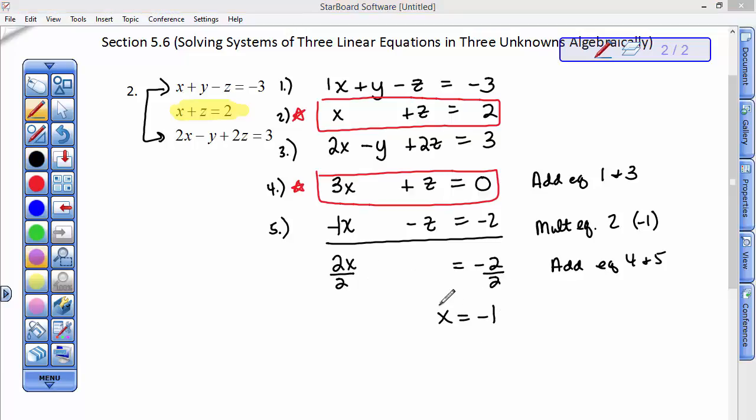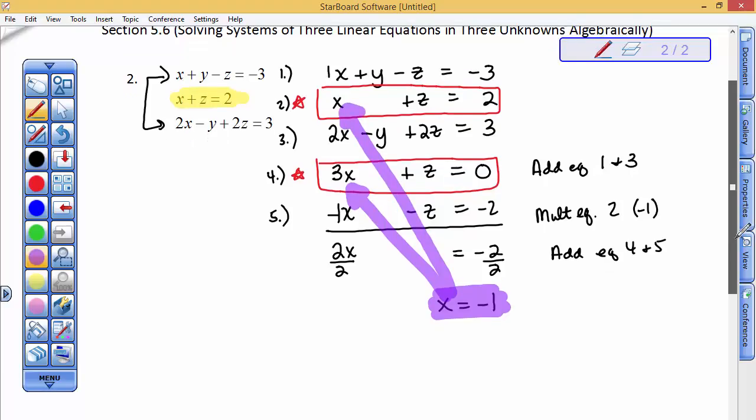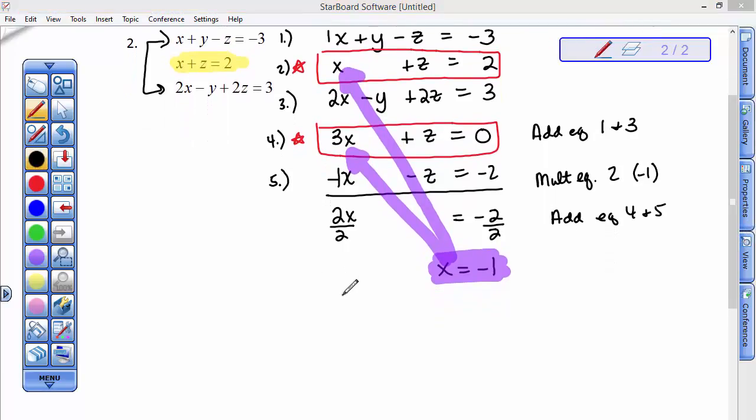I take that answer, I'm going to highlight it. I take that answer and put it into one of the equations. It looks easier to put it here. So I'm going to put it into equation 2. In equation 2, which reads X plus Z equals 2, I'm going to put a negative 1 in for X. I'm going to add 1 to both sides and I'll find out that Z is equal to 3.